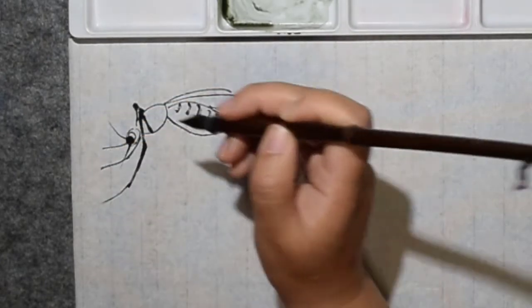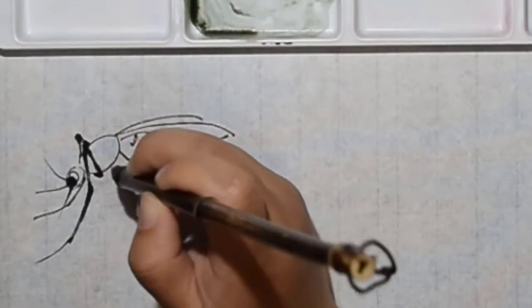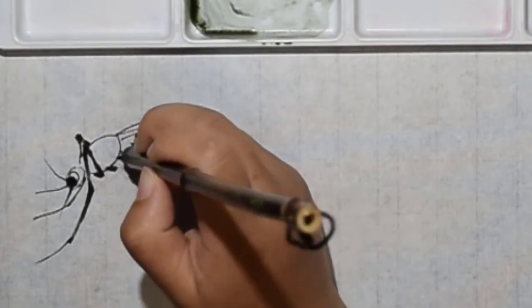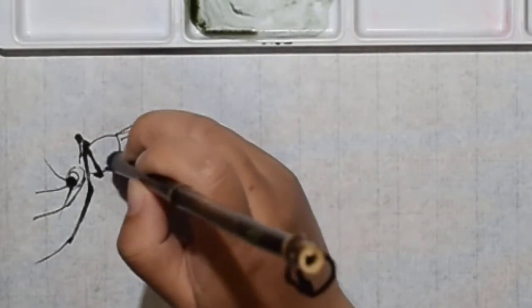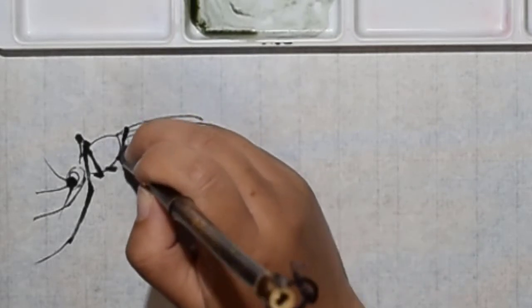Actually there are five. There is another one connected to the body, but usually we are not seeing it. See this part, you don't really see this part because it's under the thorax.